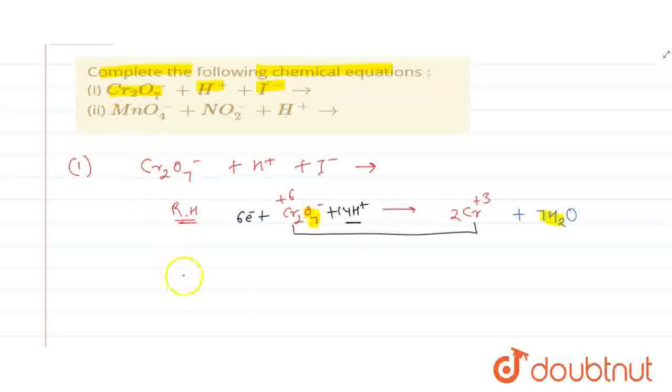Now I will write the oxidation half, in which I- is converted into I2. It will oxidize from -1 oxidation state to 0 in the reaction. We have 2 iodines, so I will write here 2I-. Now it will lose here 2 electrons.